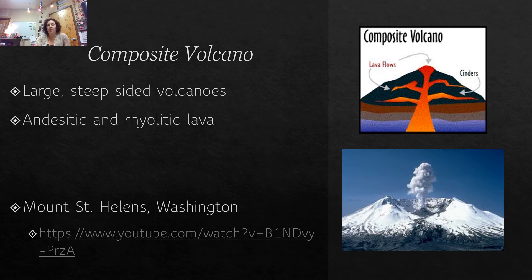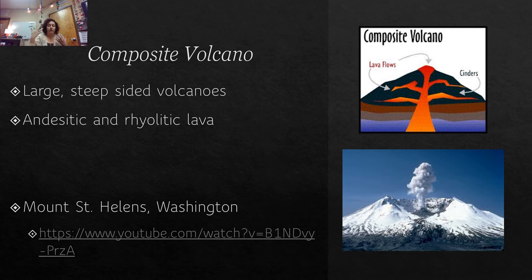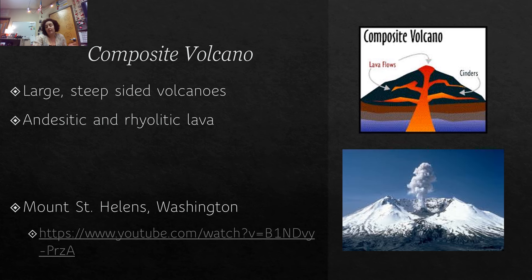Composite volcanoes tend to look like a mountain — a gentler slope but a bit more steep than shield volcanoes, because they're made up of more andesitic and rhyolitic lava, which is lighter, so you can get more of an explosion. Mount St. Helens in Washington is a great example — it was a composite volcano and is now a composite volcano with a caldera vent at the top. Composite volcanoes tend to be more mountainous and less layer-after-layer in structure.